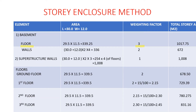For the basement walls, we find the external perimeter: (30 + 12) × 2, multiplied by the basement height of 4 meters, giving 336 square meters. The weighting factor is 2, so 2 × 336 = 672. For the superstructure walls, we use the internal perimeter: (29.5 + 11.5) × 2 × 3 meters height = 252 — times 4 floors gives 1,008. The weighting factor is 1, so that remains 1,008.